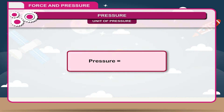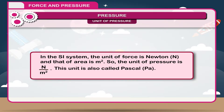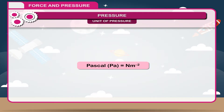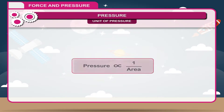Pressure is equal to thrust divided by area. In the SI system, the unit of force is Newton (N) and that of area is meter square, so the unit of pressure is N/m². This unit is also called Pascal (Pa), where 1 Pa = 1 N·m⁻². We conclude that: 1. Pressure is directly proportional to thrust — the greater the thrust, the greater the pressure. 2. Pressure is inversely proportional to the area on which force (thrust) is applied — the lesser the area in contact, the greater the pressure.